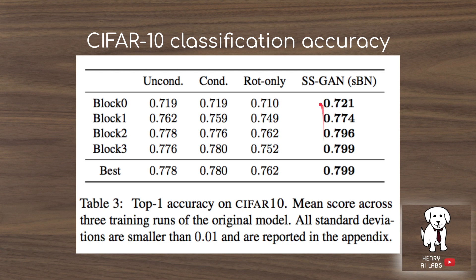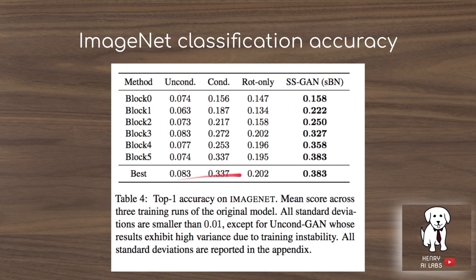On CIFAR-10 classification accuracy, the self-supervised GAN achieves about 80%, fairly similar to the others. But on ImageNet, it's much higher than unconditional or rotation-only, and a little bit higher than conditional.